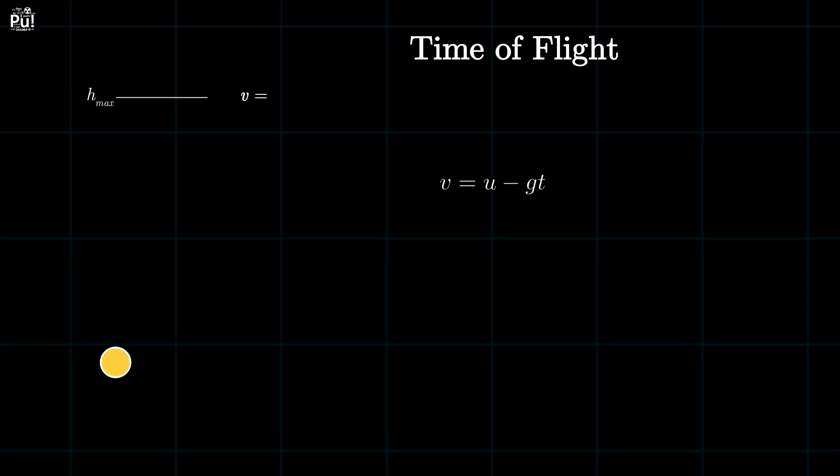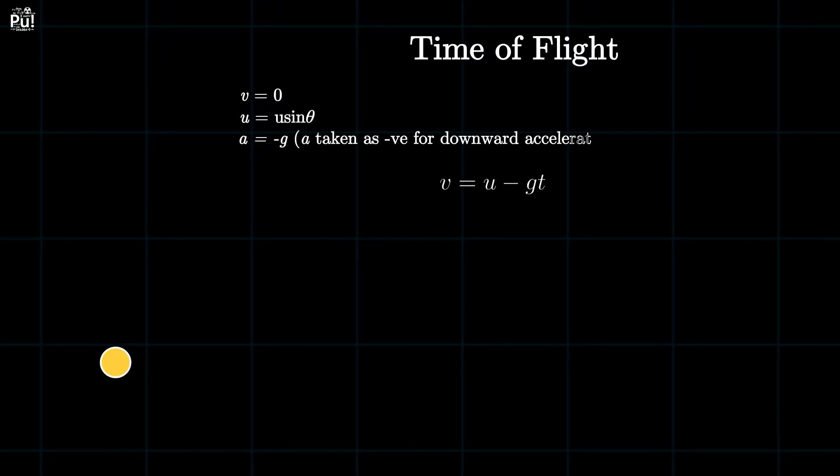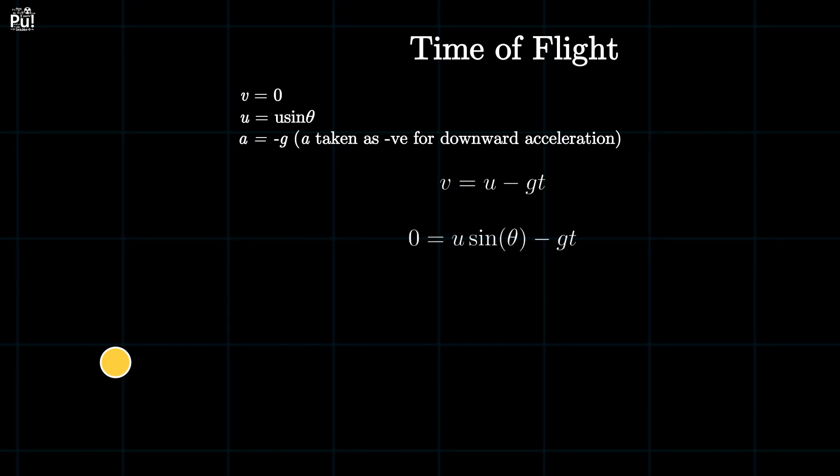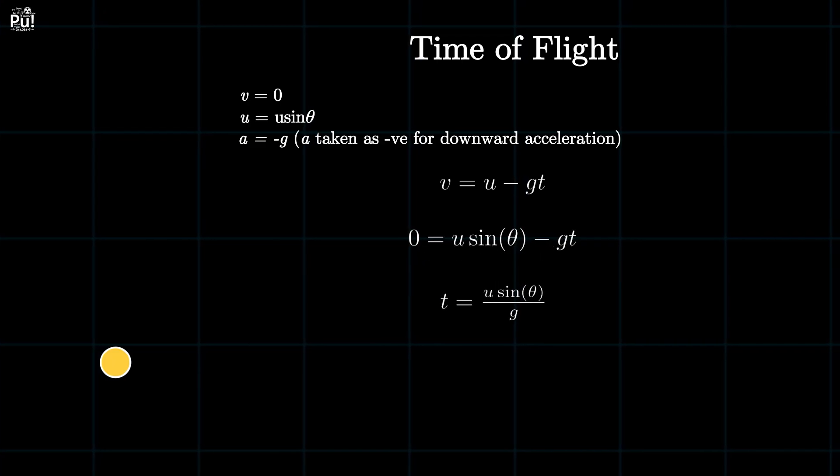At the highest point, final vertical speed is zero. Initial vertical speed is u sine theta. Acceleration is g downward, so zero equals u sine theta minus g times t. Solving this, we get time to reach the top is u sine theta divided by g.